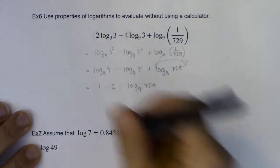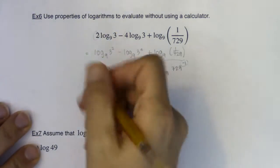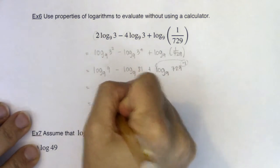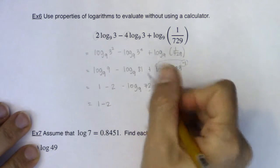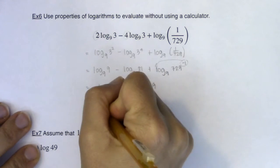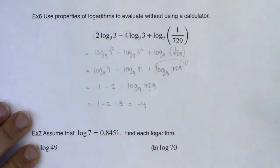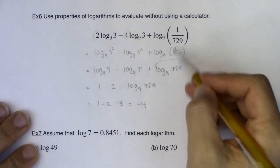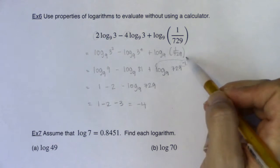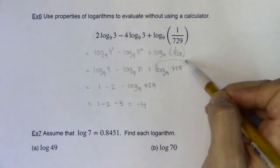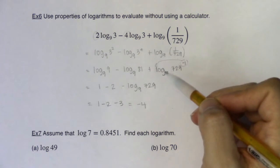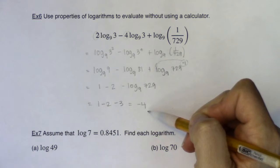So then this would become, all right, 1 minus 2 and then we know log base 9 of 729 is 3. 1 minus 2 is negative 1. Negative 1 minus 3 is negative 4. So however you see it, whether you see it as using the quotient property or whether you see it as turning it into a power with that negative exponent and bringing the exponent down in front, either way you get to negative 4.